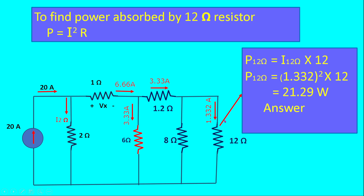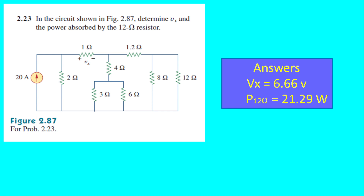Now we calculate the power absorbed by the 12 ohm resistance using P = I²R. Substituting, P = 1.332² × 12 = 21.29 watts. So we have both answers: Vx equals 6.66 volts, and the power absorbed by the 12 ohm resistor equals 21.29 watts. Thank you, hope you enjoyed this video.